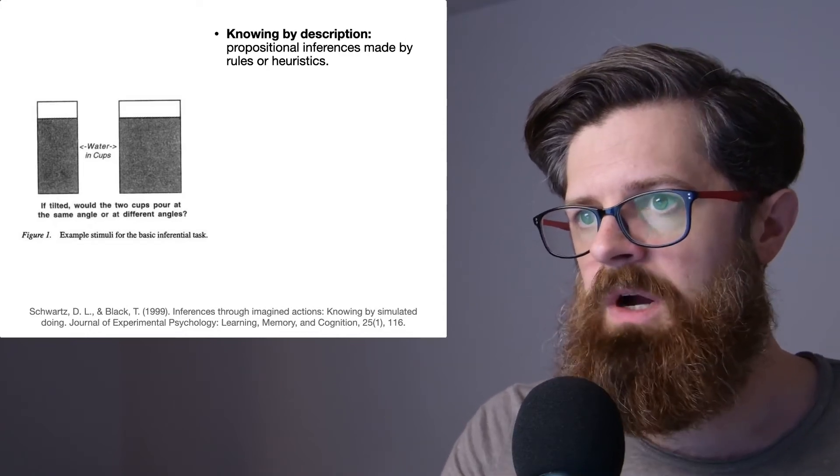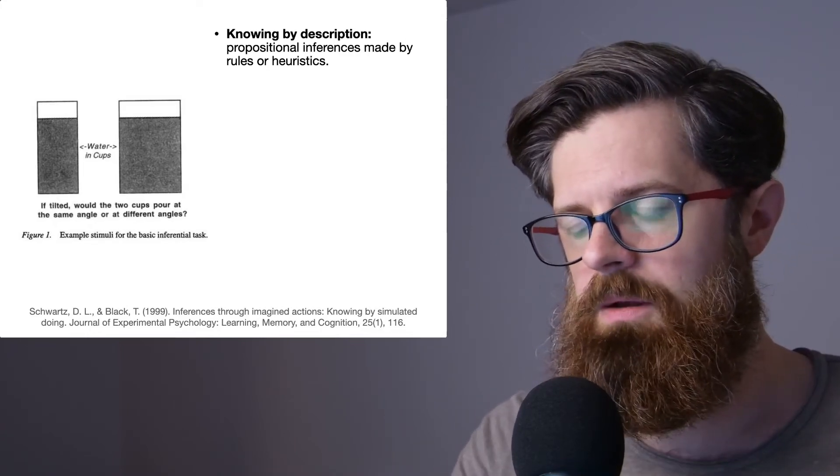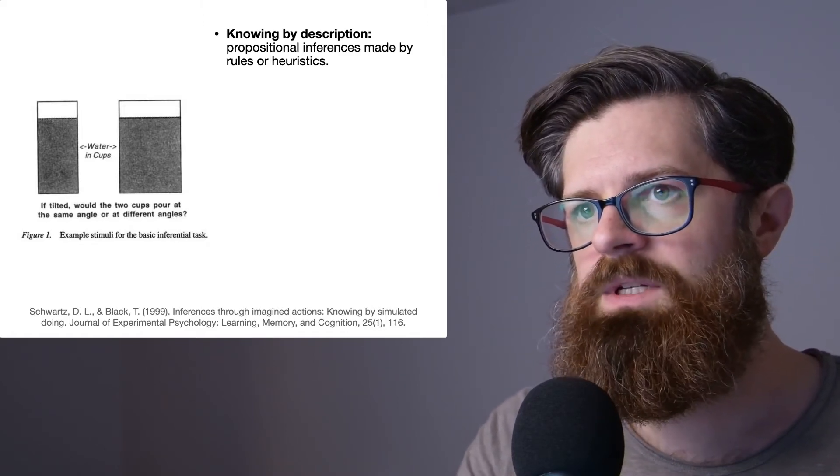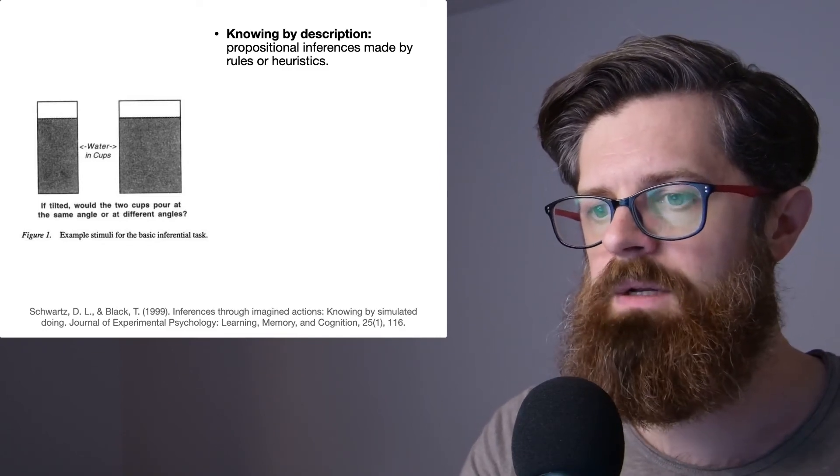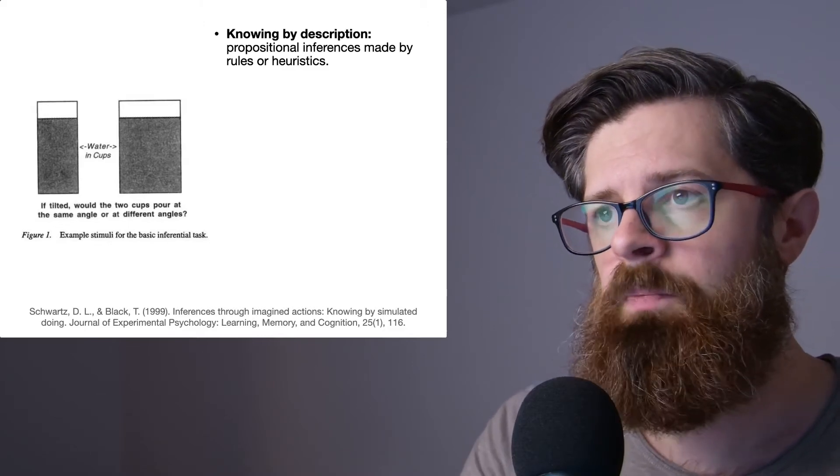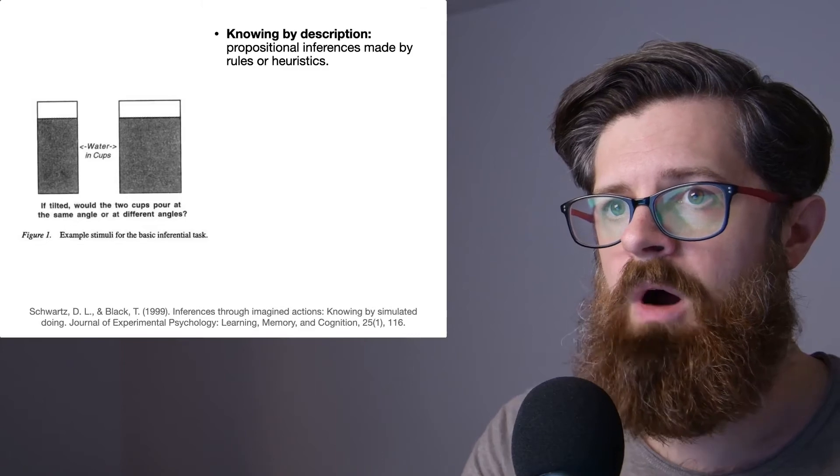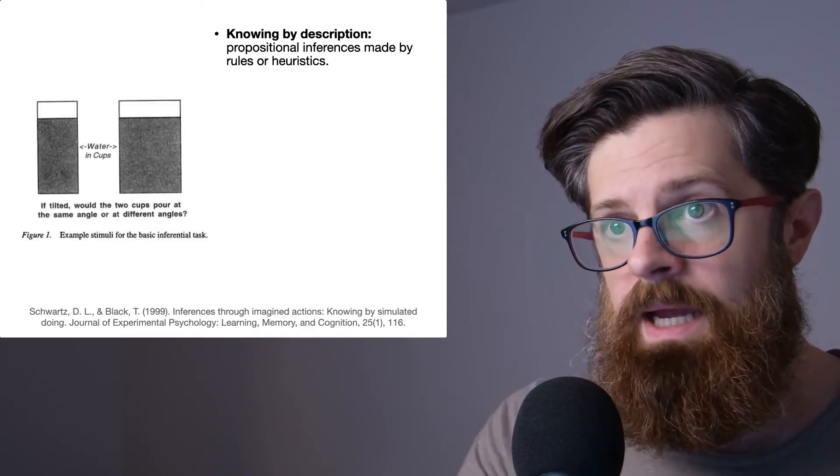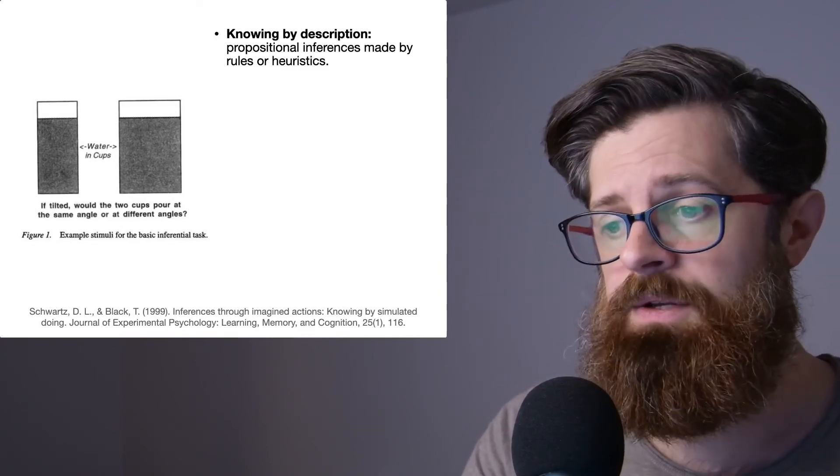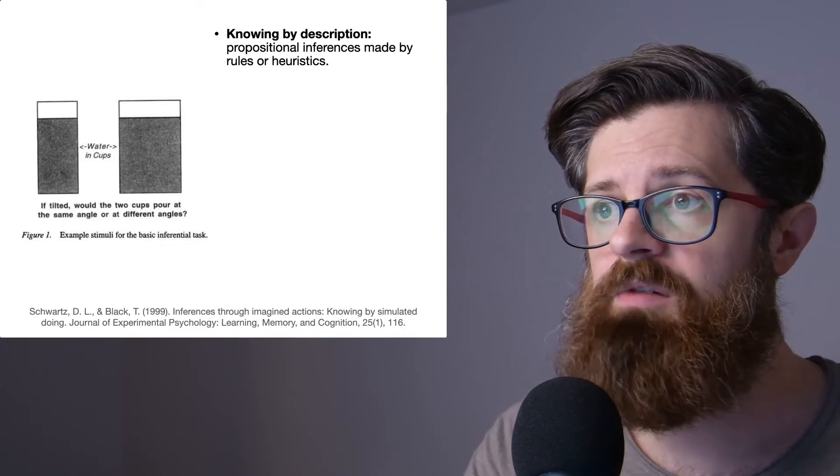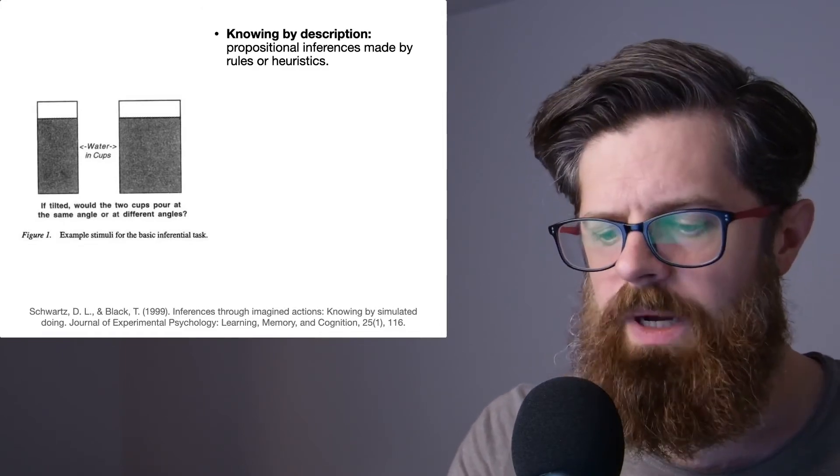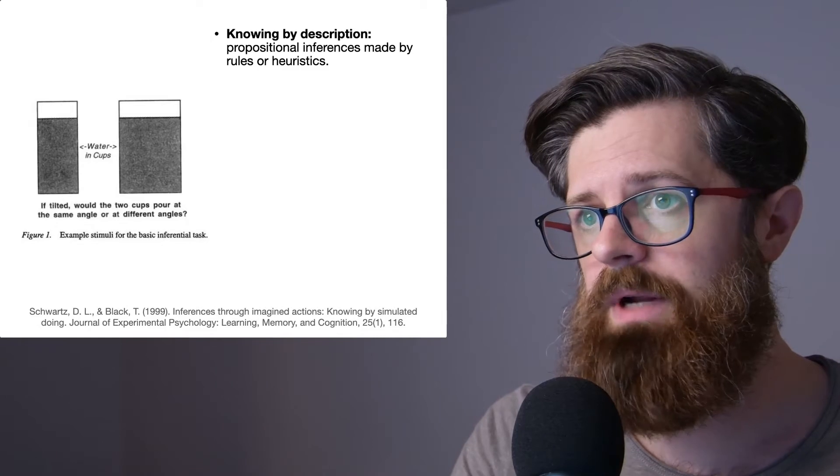Now using this kind of experimental paradigm, the paper really tries to examine different ways of answering this question. But the first one they call knowing by description, and what they mean by this is that maybe you're making propositional inferences and these could be available to you by using rules or heuristics. We're going to look at this in a bit more detail to elaborate on what that means.